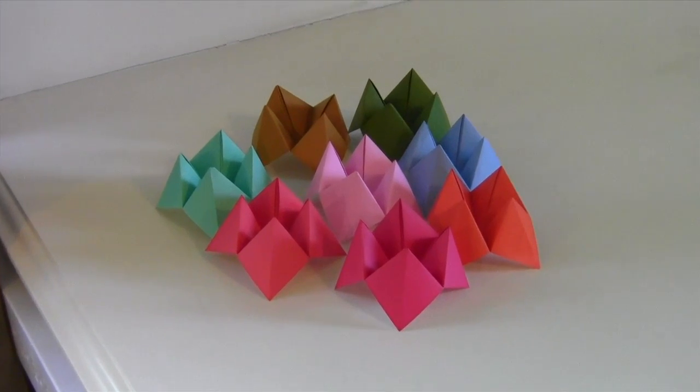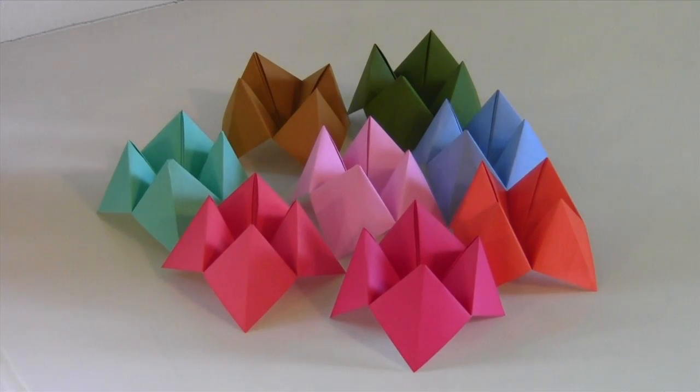Hey, this is Allie with Like Totally 80s, back today with another how-to. Today we'll talk about how to make cootie catchers, also known as origami fortune tellers. Whatever you call it, I made no fewer than 15,000 of these things in fifth grade in 1982.